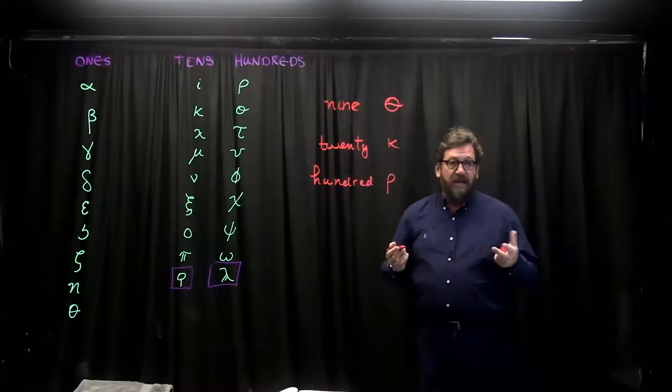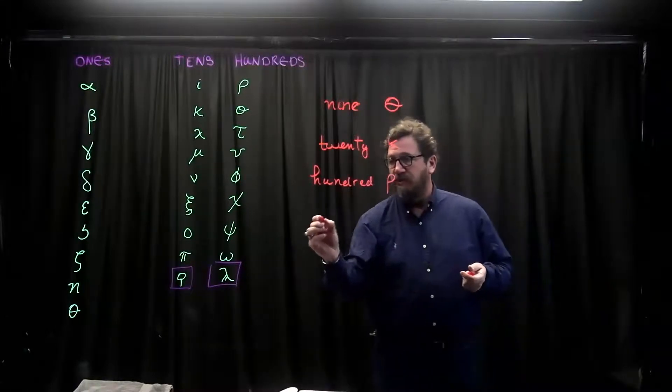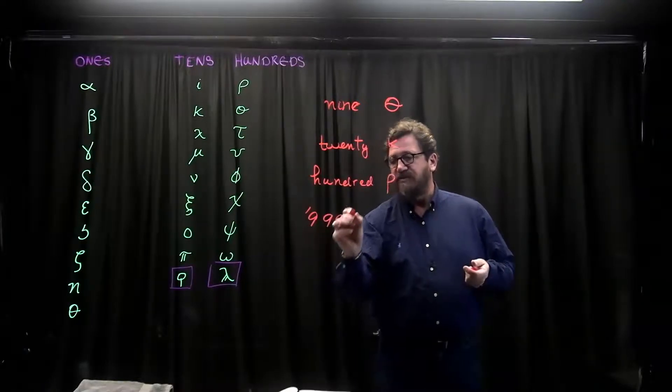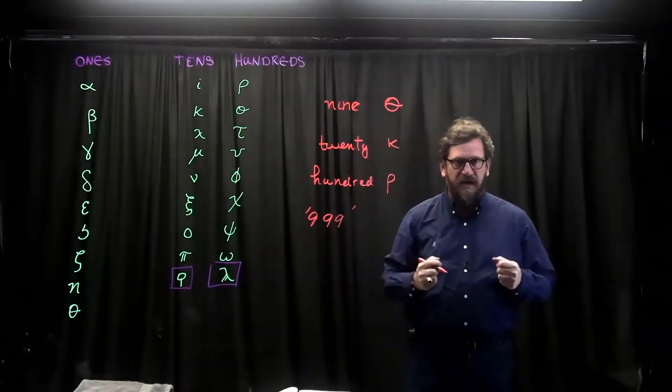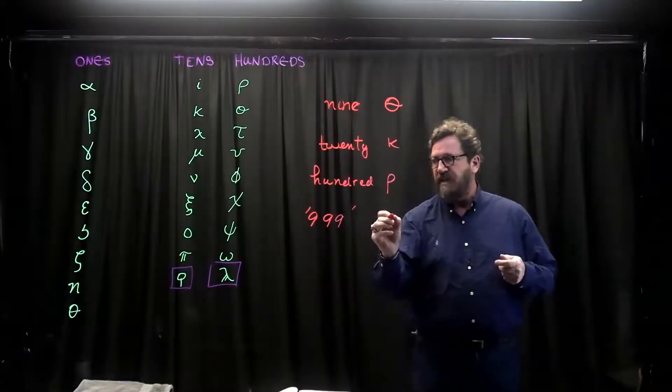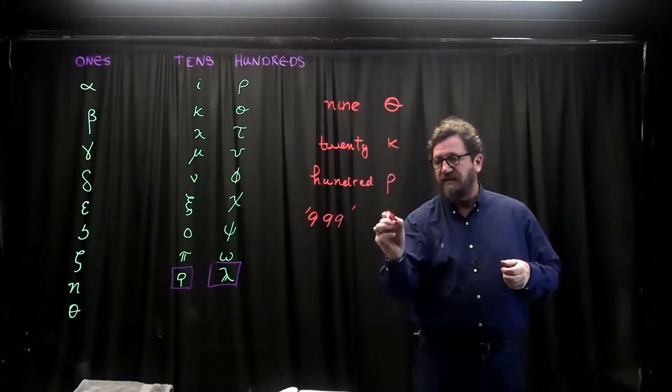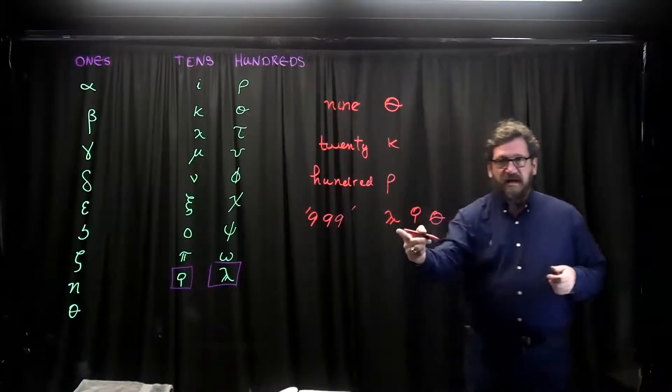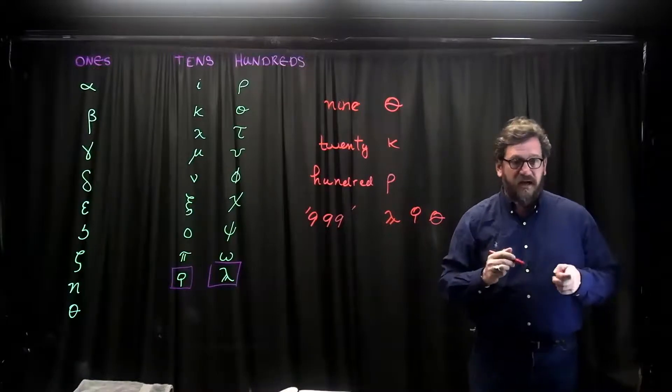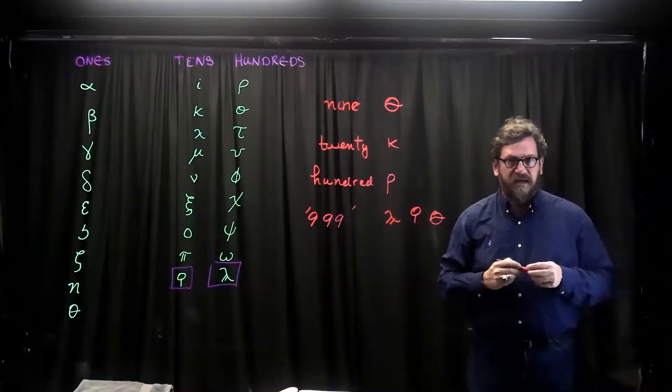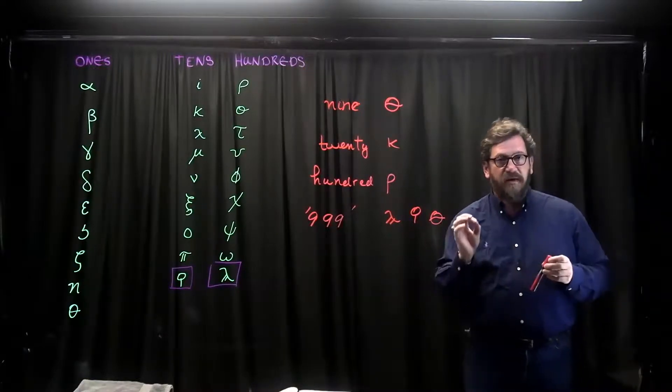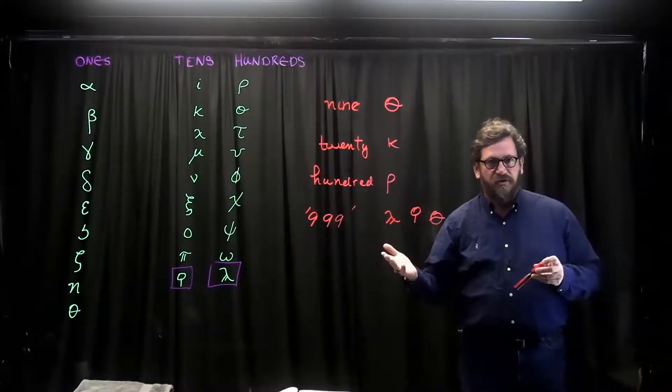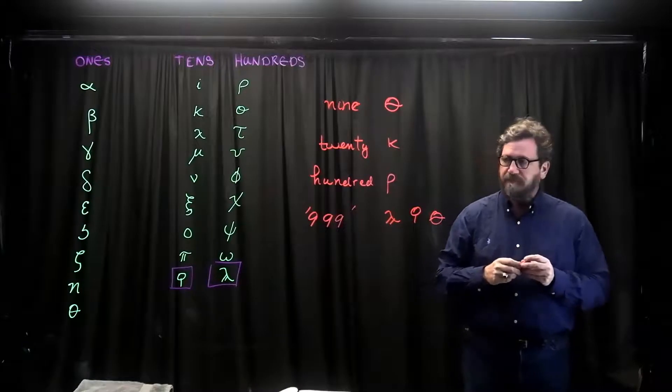And so any amount we want to represent up through 999 can be represented using at most three letters. And that would actually be 999, which would be this set of symbols right here. 990 followed by 9 more, and you simply add them together. And you write them in order of size. The larger the amount, the further to the left it's going to be.